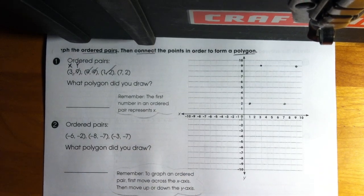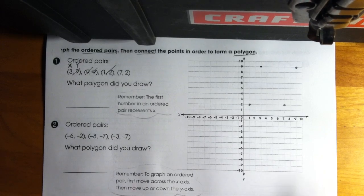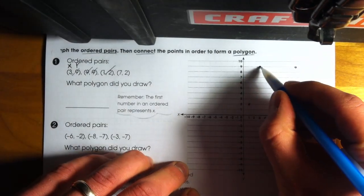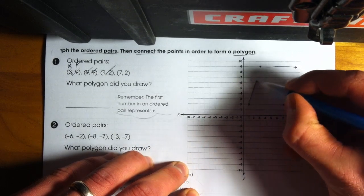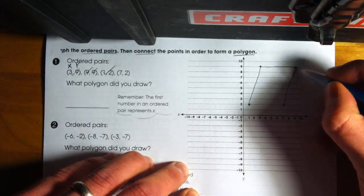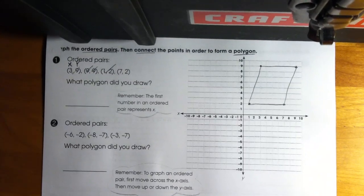So we've done the first part of our question, which is graphing the ordered pairs. Then we have to connect the points in order to form our polygon. So I'm going to do this in the order in which we created them. And then, so what polygon did we draw here?